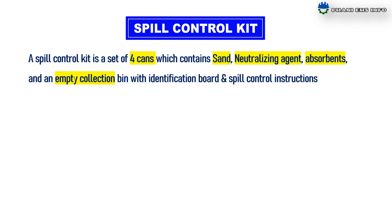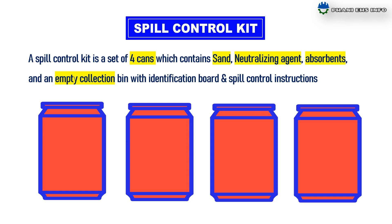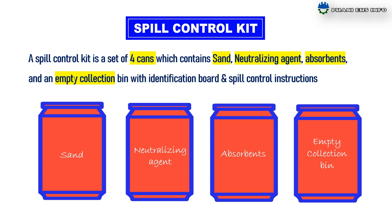Spill Control Kit. A Spill Control Kit is a set of 4 cans which contains sand, neutralizing agent, absorbent, and an empty collection bin with an identification board and spill control instructions.